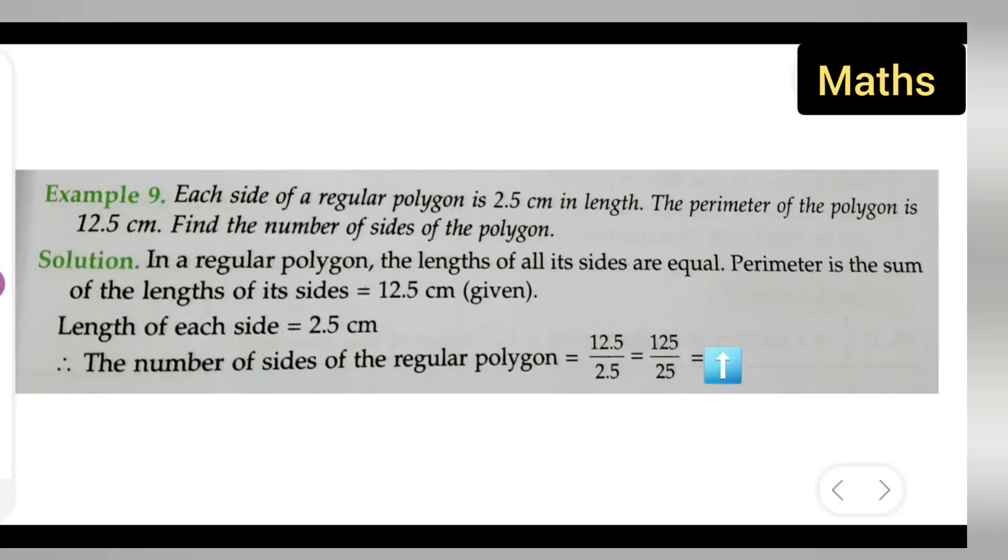Now if you multiply both by 10, you are going to get 125 upon 25. The decimal point will go. We know that you can cancel this: fives are 25, five twos are 10, five fives are 25, then five ones are five, five fives are 25. So you are getting the answer to be 5.